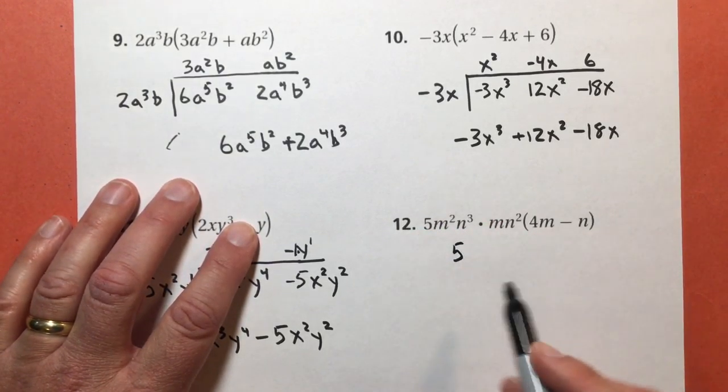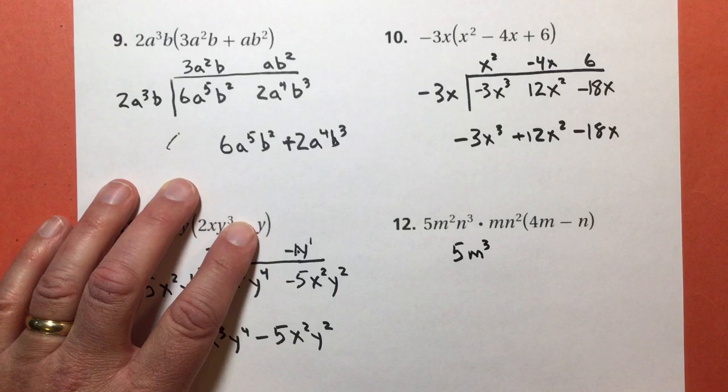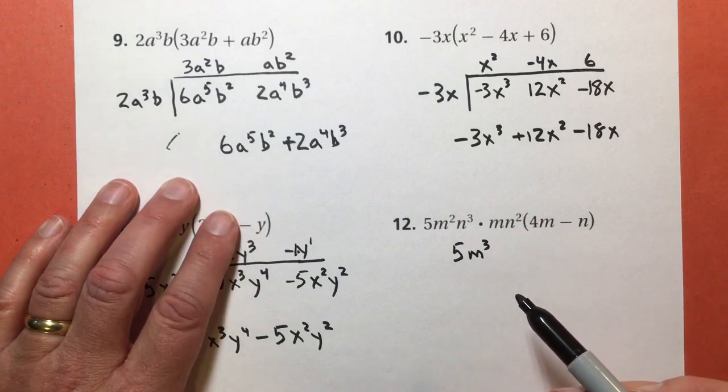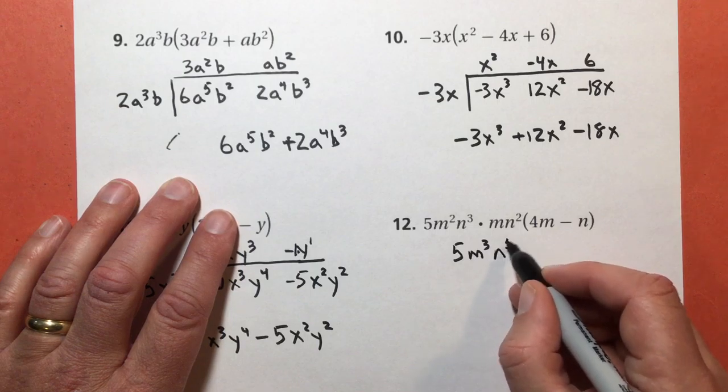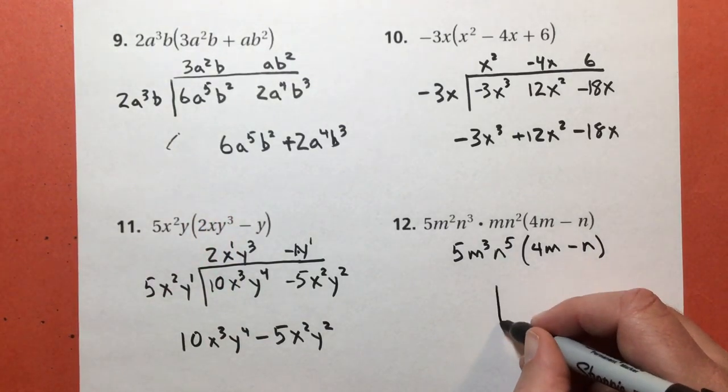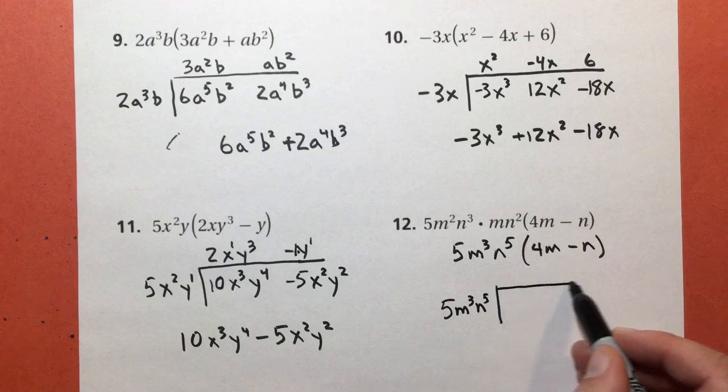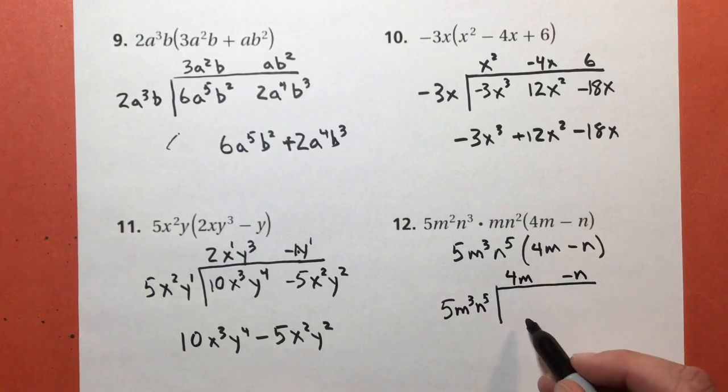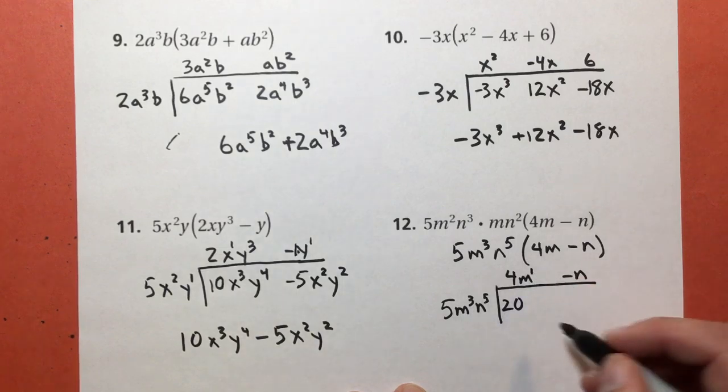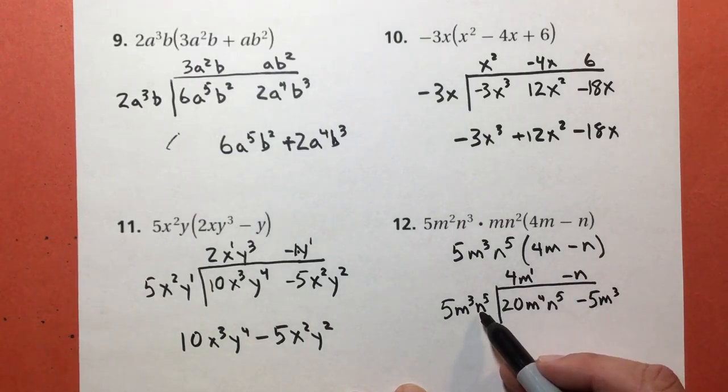5 times 1 is 5. m to the second power times another m. 2 plus 1 equals 3. m to the third power. n to the third power times n to the second power. I'm from Indiana, so my m's and n's sound the same. 3 plus 2 equals 5. And I still have 4m subtract n in the parentheses. Now I can make my multiplication chart. 5m to the third n to the fifth times 4m subtract n.